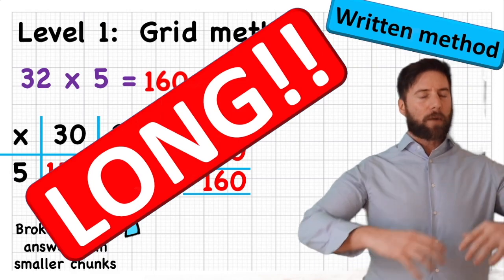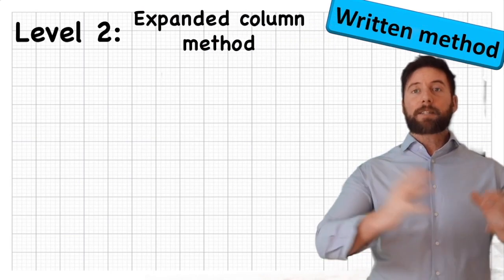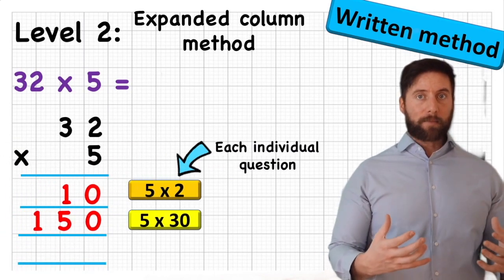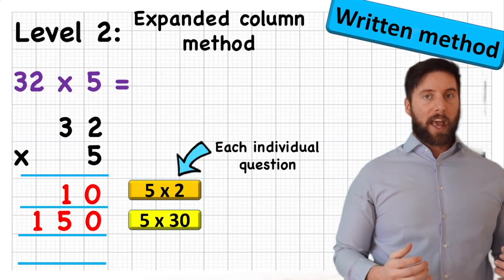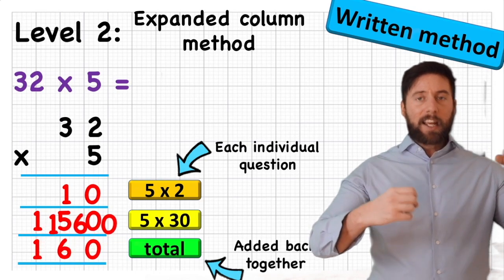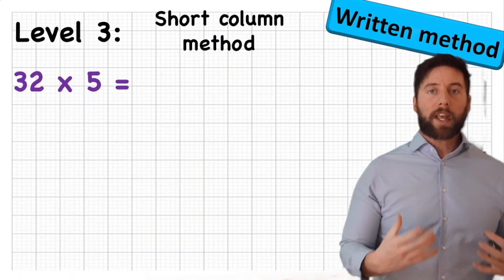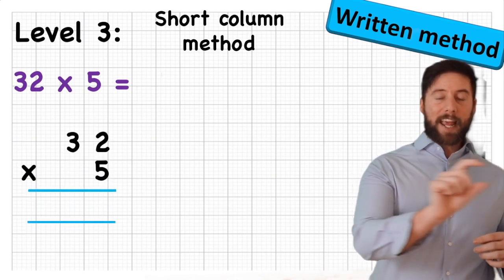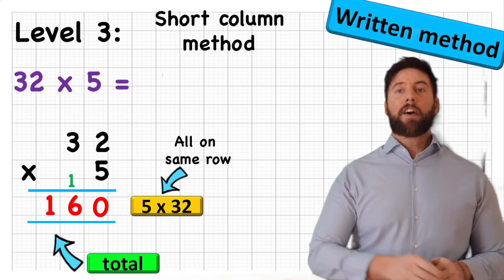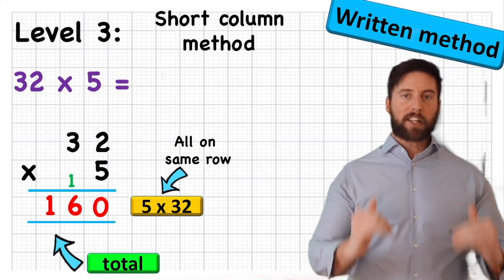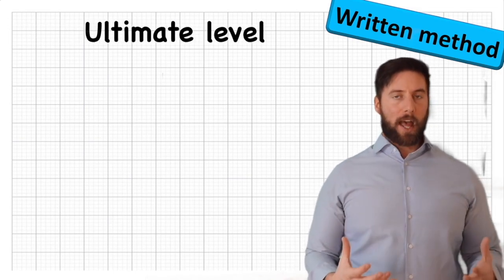The grid method was a bit long — when we got into bigger numbers it got a bit laborious. So we moved into the formal written method using columns. We first looked at an expanded method, which was like grid method but in formal written form: we still partitioned every part and wrote down each individual question across four or five rows. After that, we looked at multiple digit multiplied by a single digit done more quickly on one row — for example, 32 times 5 all in the first row rather than separate rows for 5 × 2 and 5 × 3.